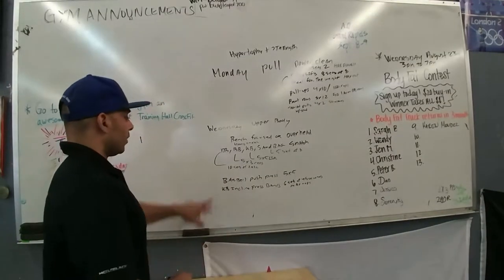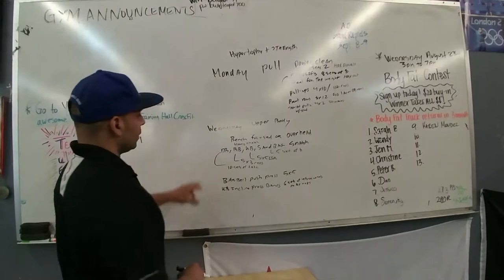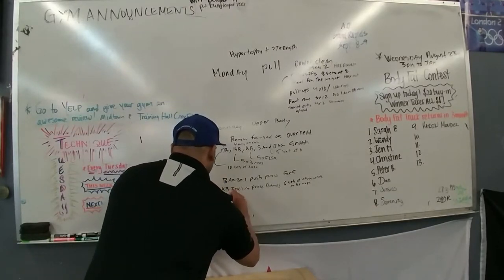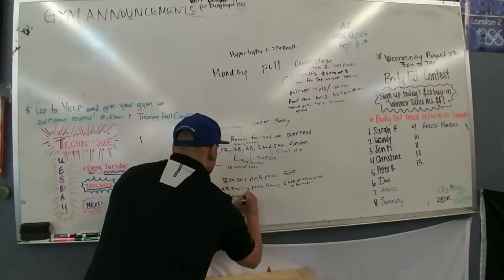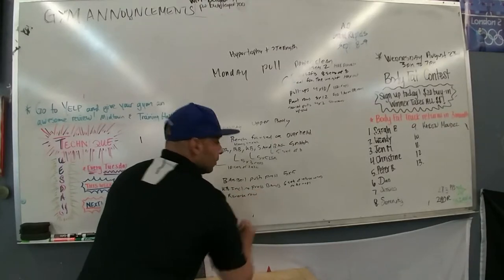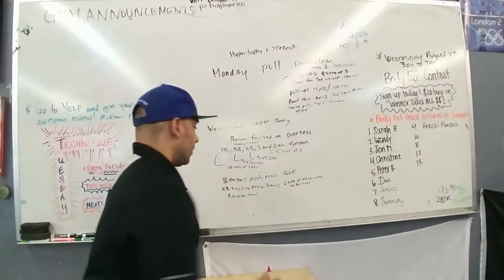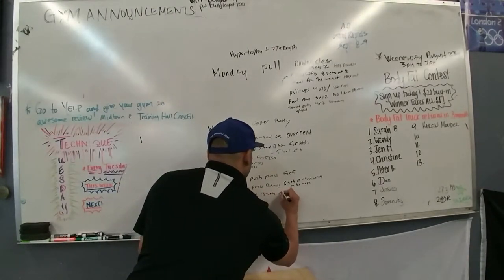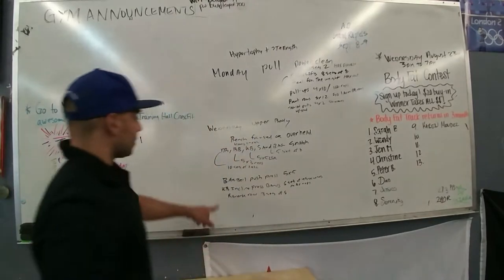So kettlebell incline press right here. Select some weights where you can really get a good pump going and really hit those wraps up. So right here, after doing two push movements, I'm going to go probably do maybe a row. Maybe a reverse row. To balance out your shoulders. Keep your shoulders healthy. Reverse row. So three sets of eight. Right here.